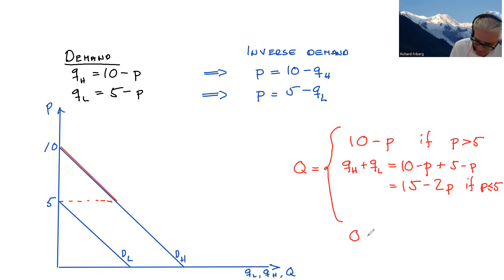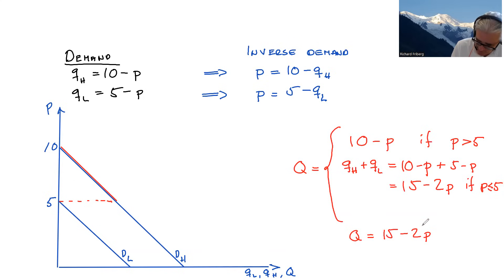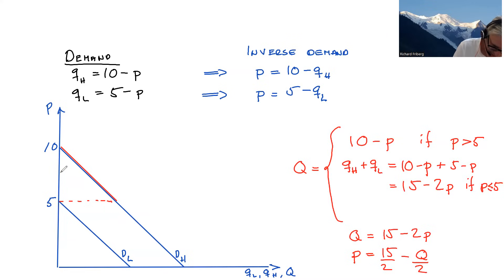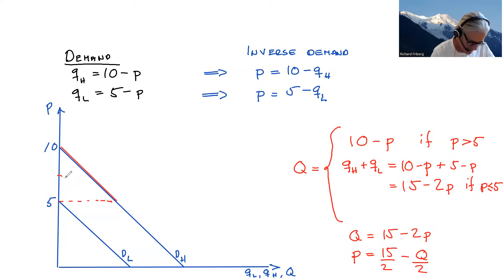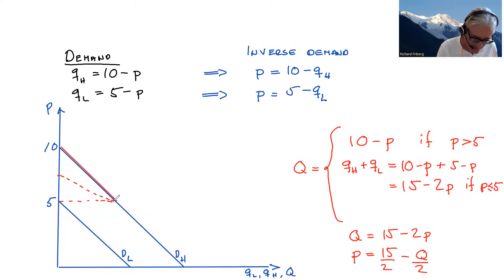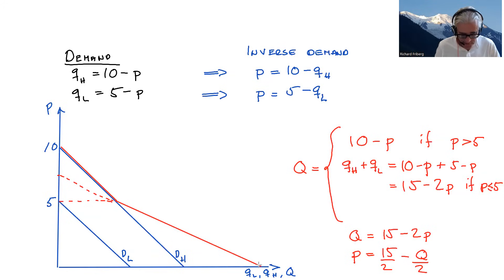If we want to draw this, we rewrite 15 minus 2p and look at the inverse demand function again. Shifting over p and solving for p leads us to 15 over 2 minus q over 2. So 15 over 2 is 7.5, which gives the intercept for this line — though at first it's not capturing demand, it's just giving us the right slope for the aggregate demand function when both individuals are in the market.